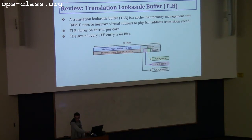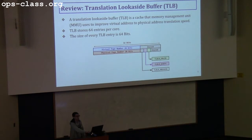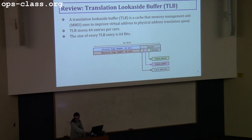We also covered the TLB, which is used by the MMU to speed up translation from virtual to physical addresses. Every core has 64 entries for the TLB, and each TLB entry is 64 bits divided into 32 bits — one for the virtual address and one for the physical address. There are some flags like TLB dirty and valid that are more useful now in 3.3, and we're going to discuss those.